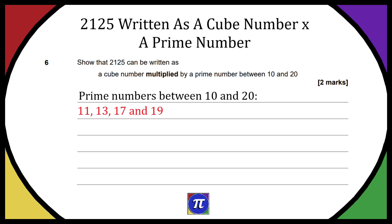So we've got 11, 13, 17, and 19. And then from there, if we just divide 2125 by all of these numbers, hopefully we'll get a cube number and then we're going to have an answer to our question.